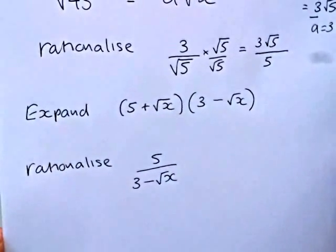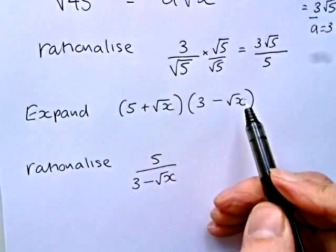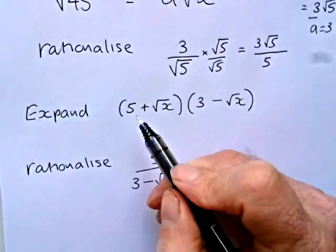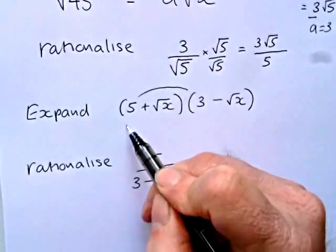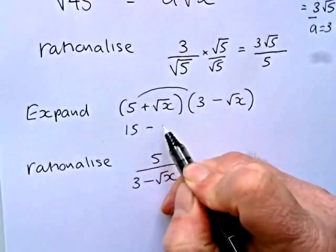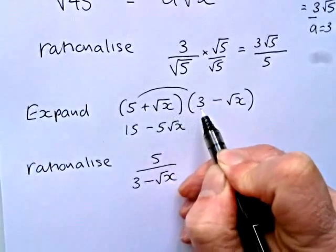Onto expanding. And if we expand, this is very much like expanding linear brackets, except we have the square root, we have the surd involved. So we have five 3s, 15. We have 5 times minus root x. That's minus 5 root x. We have root x times 3, which is plus 3 root x.